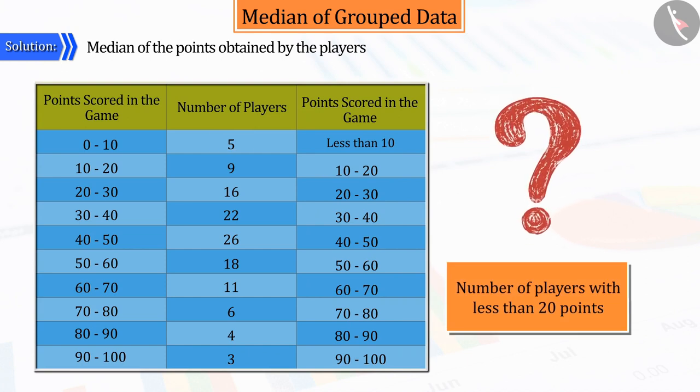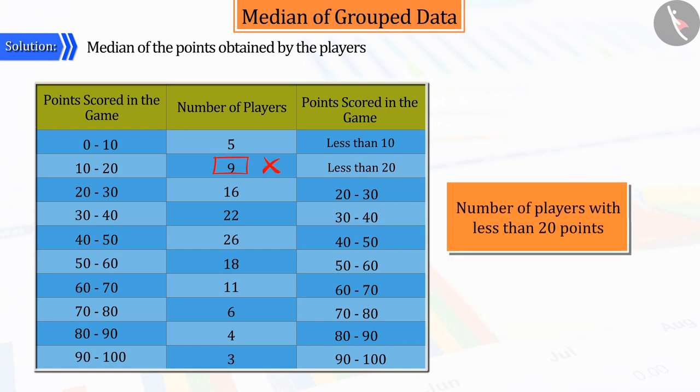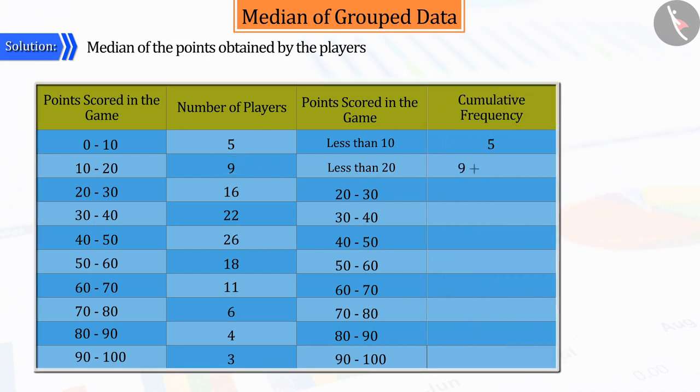Now tell how many players got less than 20 points. No. If you think 9 players, it would be a wrong answer. Rather, here, the number of players scoring less than 20 points will be 14.